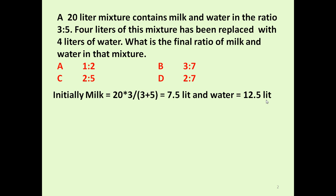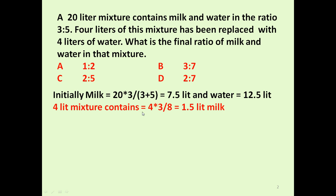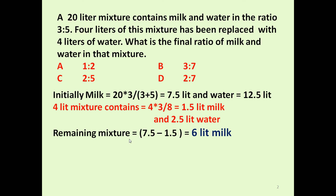Now, 4 litres of this mixture is removed. That 4 litre mixture contains 4 into 3 by 8, which is 1.5 litres of milk and 2.5 litres of water. When this 4 litre is removed, the remaining mixture contains 7.5 minus 1.5 equals 6 litres of milk, and 12.5 minus 2.5 equals 10 litres of water. So the remaining 16 litres has 6 litres of milk and 10 litres of water.